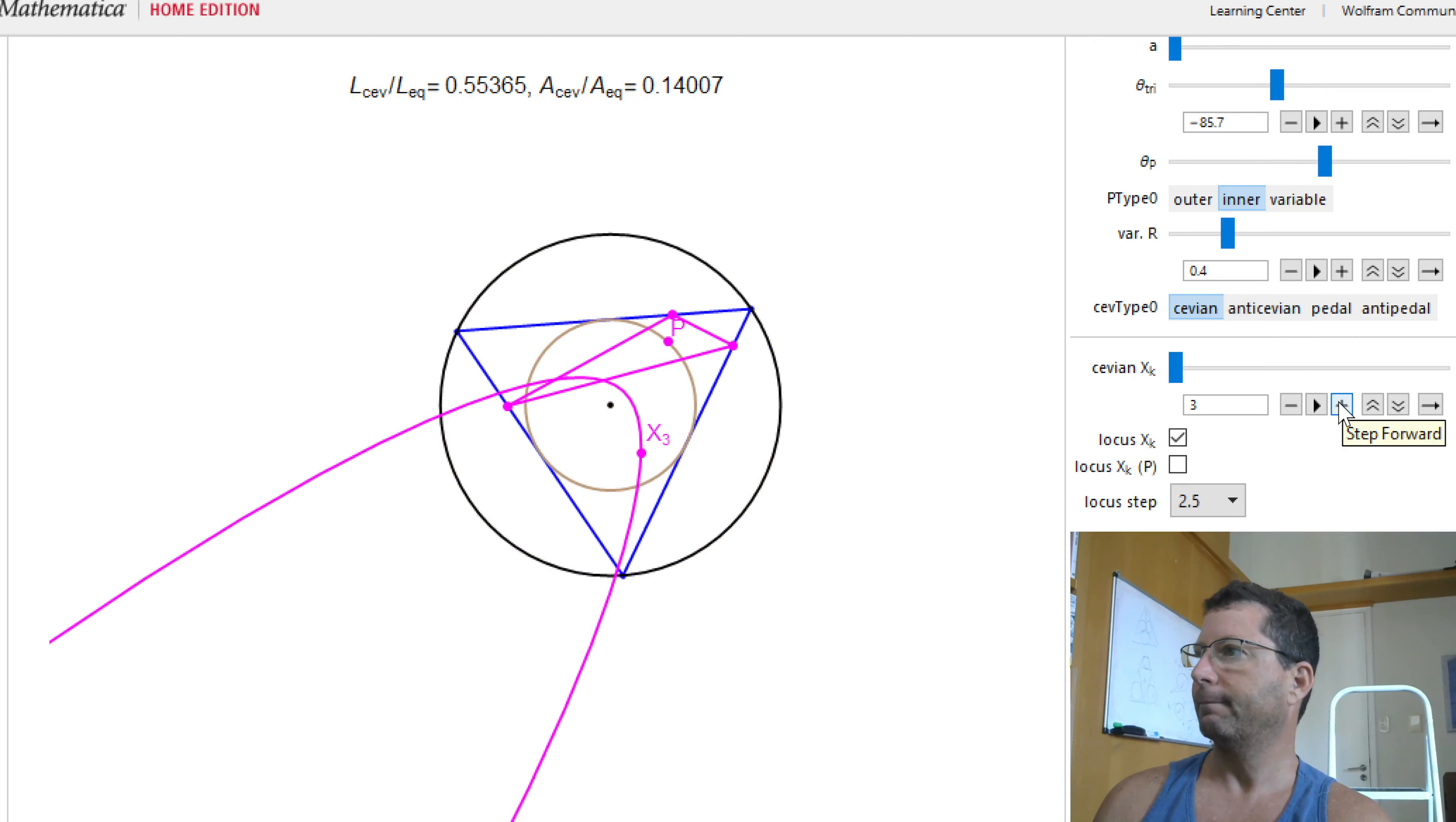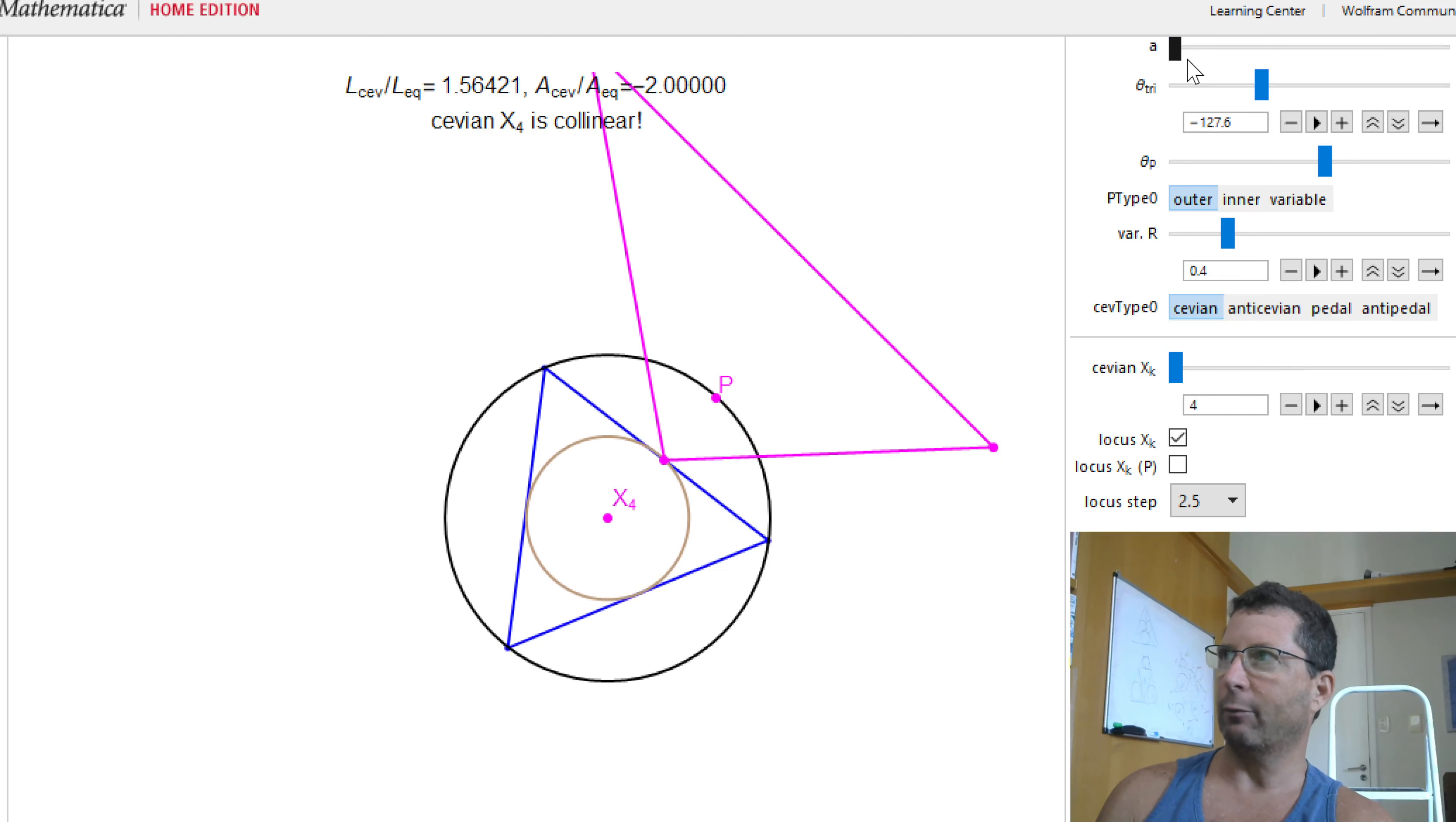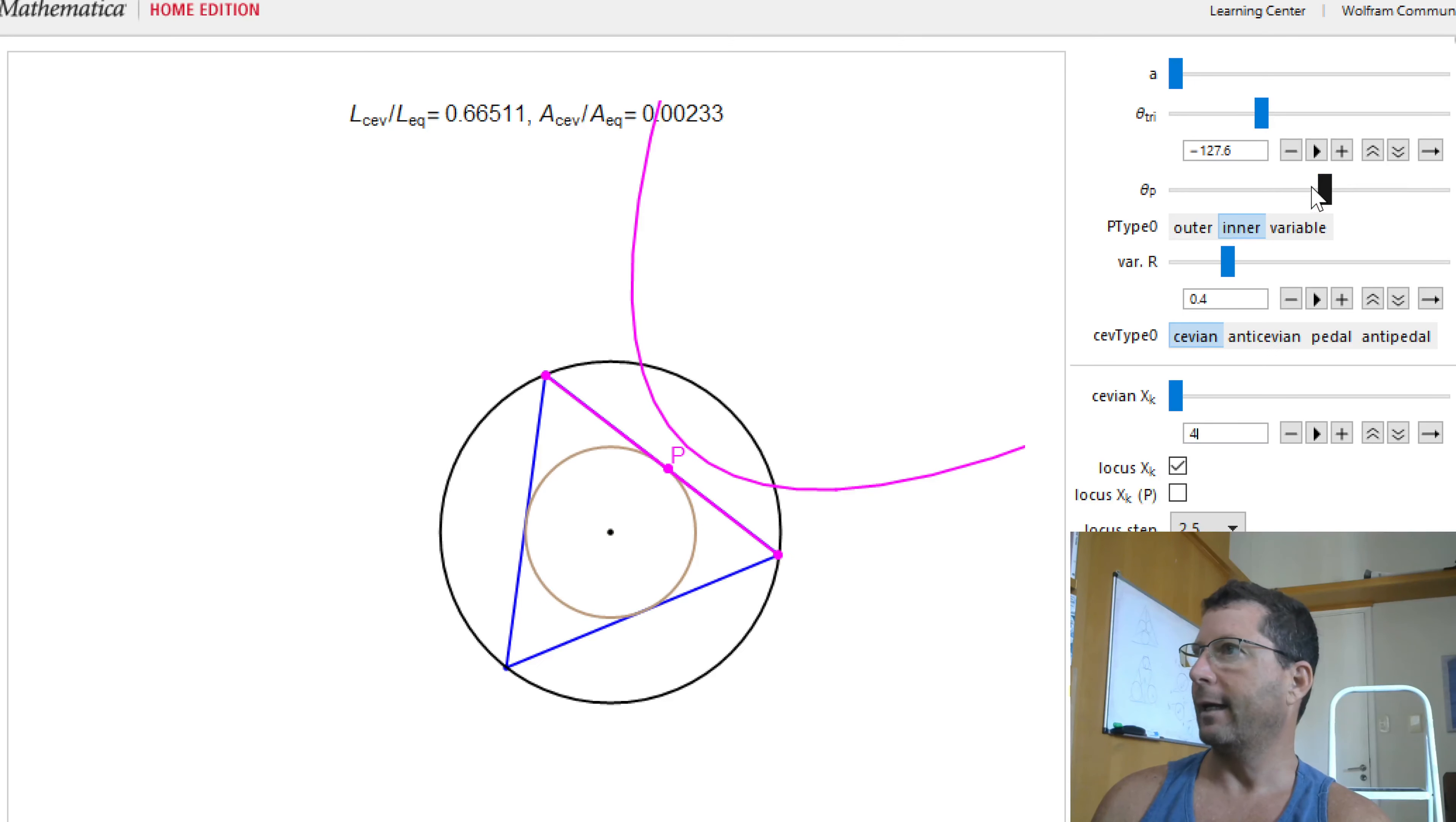How about X4? Now recall that when P was outside, X4 had this really strange property of being stationary at the center. And we saw that when we actually applied affine, X4 exploded. Now let's go ahead and move P to the inner, to the in-circle. And let's get the triangle out of this place.